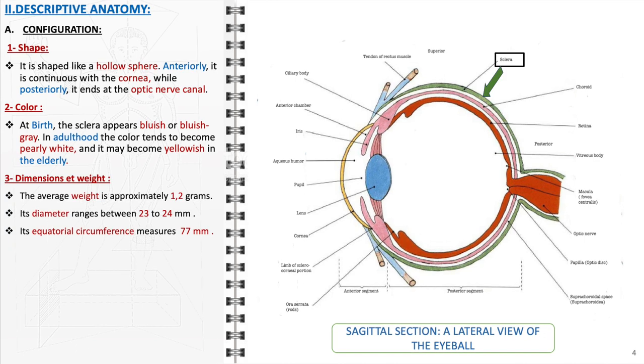Regarding its dimensions and weight, the sclera is comparatively light, with an average weight of about 1.2 grams. Its diameter typically ranges between 23 to 24 millimeters, and its equatorial circumference measures approximately 77 millimeters.